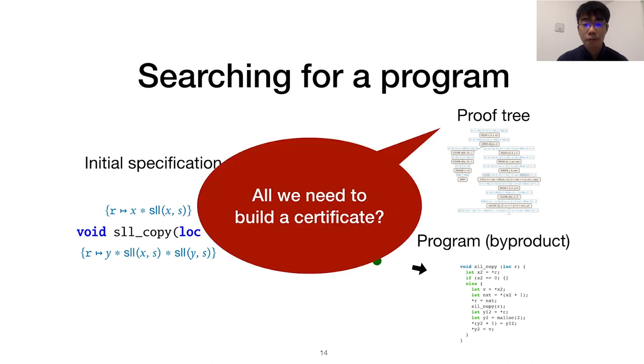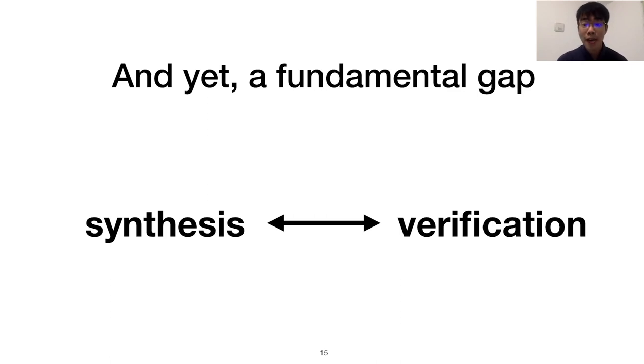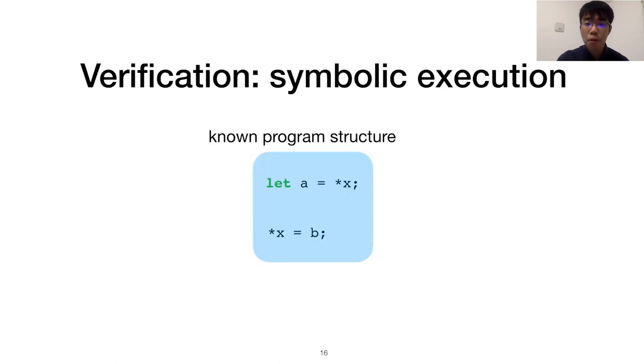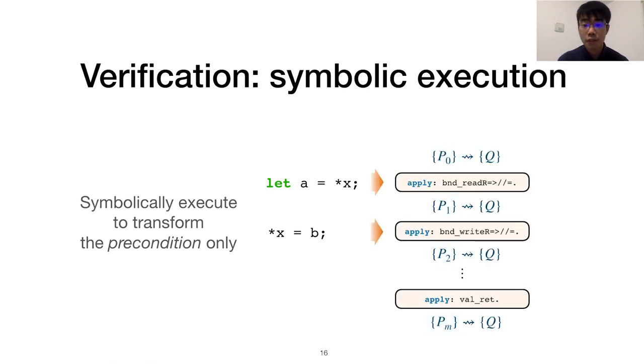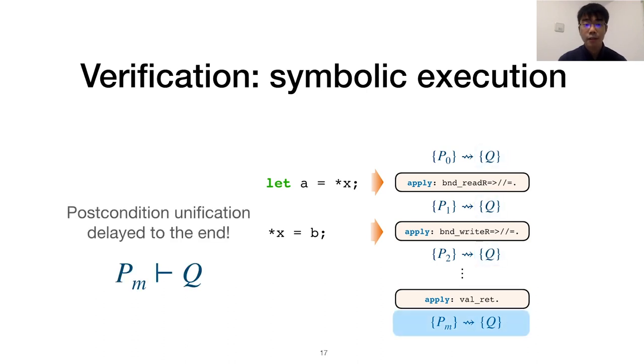In theory, the sequence of SSL rules applied to synthesize the program should be all we need to build a valid Coq certificate. Interestingly though, there's a fundamental gap between synthesis and verification proofs, which prevents a straightforward generation of these proof certificates. In verification, a program implementation is known ahead of time. This means we can use its structure to guide the proof, symbolically executing a proof step corresponding to each program statement. The precondition P is transformed as we go. Notice how post-condition Q stays untouched. Only at the very end does the fully symbolically executed precondition PM get unified with post-condition Q.